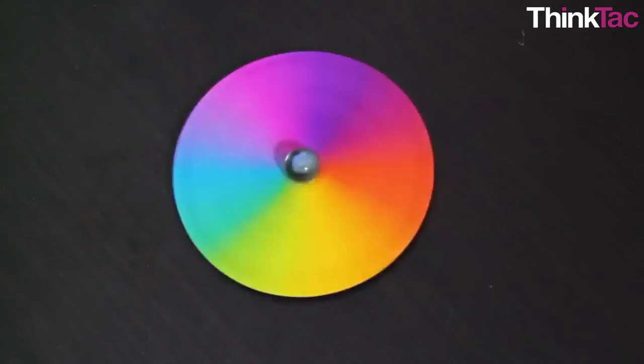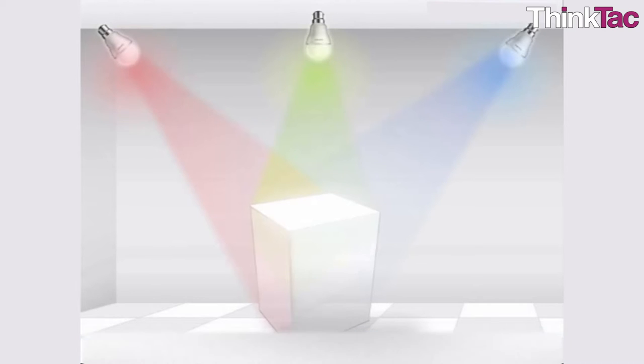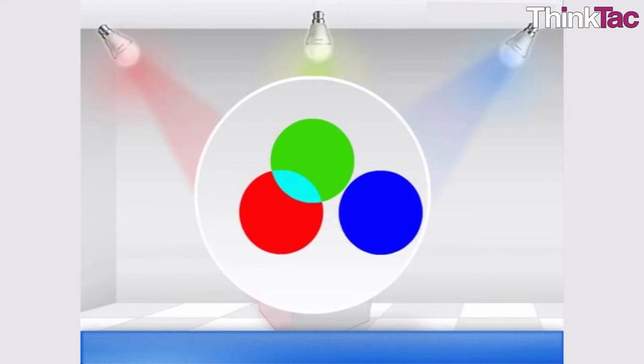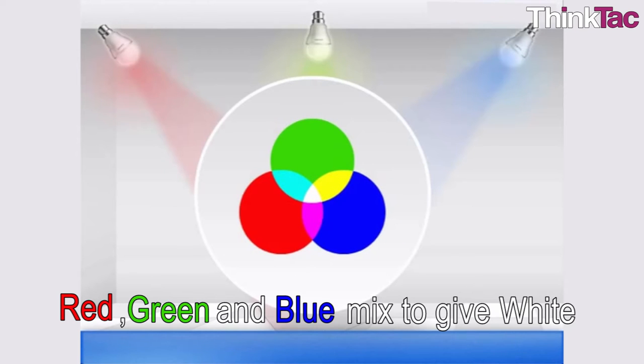We already know that combining the seven colors of the rainbow provides white light, but combining only three distinct frequencies of light can also produce white light, provided that they are widely separated on the visible light spectrum. Any three colors or frequencies of light that produce white light when combined with the correct intensity are called primary colors of light. There are a variety of sets of primary colors. The most common set of primary colors is red, green, and blue.